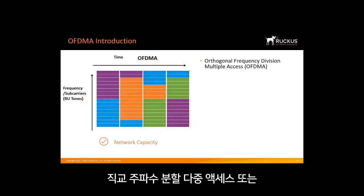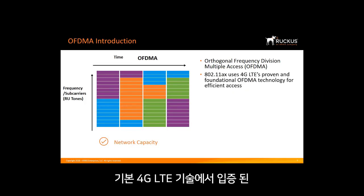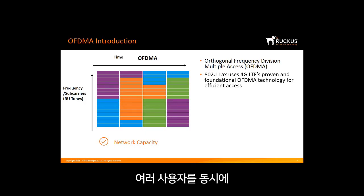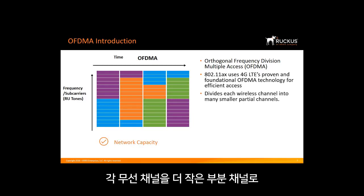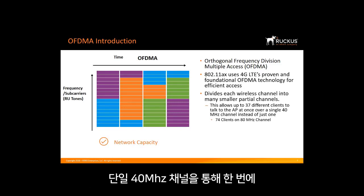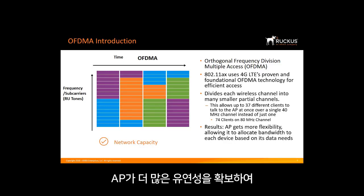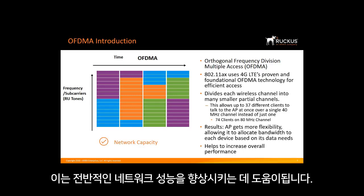Perhaps the biggest change is a feature called Orthogonal Frequency Division Multiple Access, or OFDMA. 802.11ax uses 4G LTE's proven and foundational OFDMA technology for efficient access. This technology allows multiple users with varying bandwidth needs to be served simultaneously. It chops up each wireless channel into many smaller partial channels, allowing up to 37 different clients to talk to the AP at once over a single 40 MHz channel instead of just one. Over an 80 MHz channel, it will allow up to 74 clients. The AP gets more flexibility to allocate bandwidth to each device based on its data needs, helping to increase overall network performance.